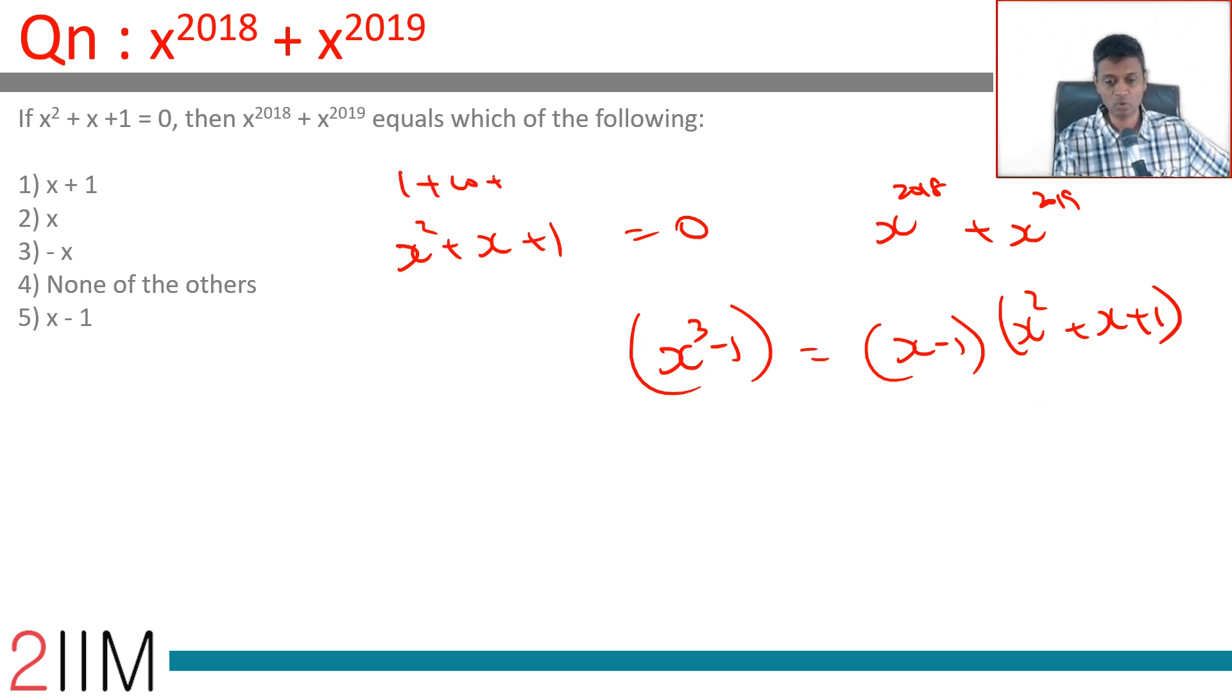1 + ω + ω² = 0, where ω, ω², and 1 are the cube roots of unity. That's the idea we're looking for that's sitting inside this.